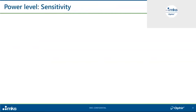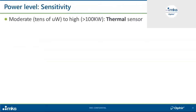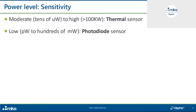Regarding power level and sensitivity: typically for measuring powers from tens of microwatts and upwards, one uses a thermal sensor. At Ophir, we have thermal sensors that can go down to 8 or 10 microwatts, which is quite sensitive for this type, and a thermal power sensor that can measure up to 120 kilowatts. For lower powers — down to picowatts and nanowatts, up to hundreds of milliwatts — we typically use a photodiode sensor, which is much more inherently sensitive than thermal sensors.